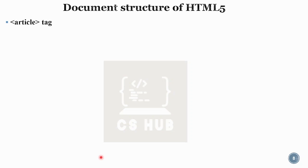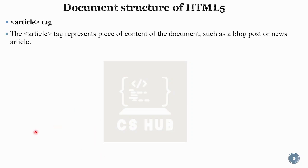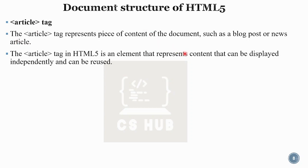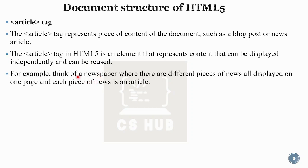The article tag is used for a piece of content such as a blog post or a news article. It represents content that can be displayed independently and can be reused. For example, in a newspaper, there are different pieces of news displayed on one page — each piece of news is an article.